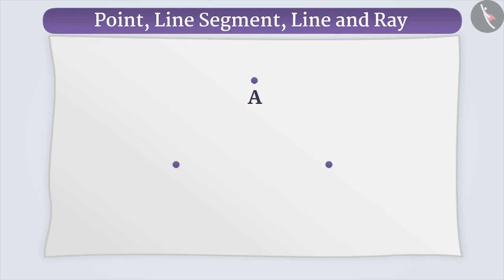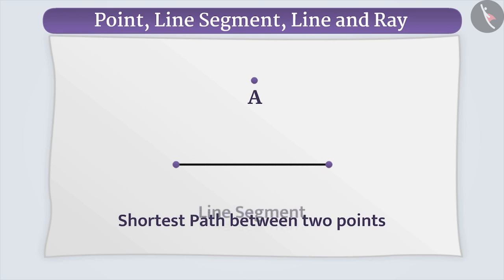If we draw two such points and connect them directly to the path, then we get the shortest path between these two points. The shortest path between two points is called a line segment. The line segment is named based on its end points such as the name of this line segment is line segment AB or line segment BA.